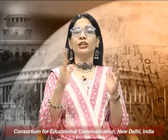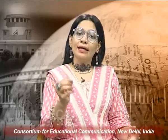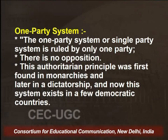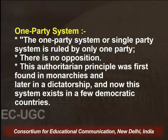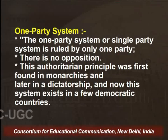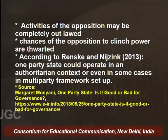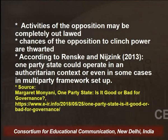We now look at three distinct typologies of party system: one-party system, two-party system, and multi-party system. The one-party system, often called single-party system, is ruled by one party with no opposition. This authoritarian principle was found in monarchies and later in dictatorships, and critics point out that it exists in a few democratic countries too. Margaret Monjani points out that activities of the opposition may be completely outlawed, and that a one-party state could operate in an authoritarian context or even within a multi-party framework setup.